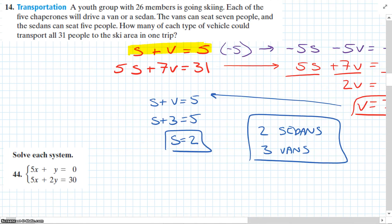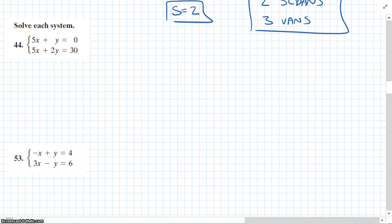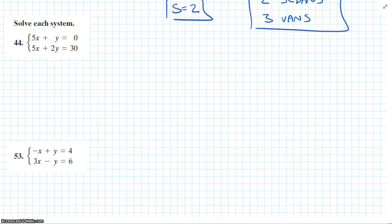Next question. Solve each system: 5x + y = 0, 5x + 2y = 30. We're just going to subtract these two equations. So we're going to make the top one negative so they're going to cancel.